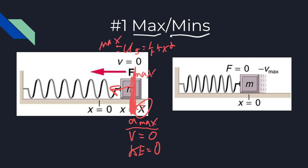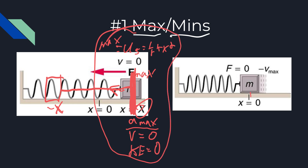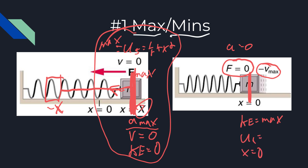As long as you know one of the extremes, you know all the rest. The spring moves to the opposite end — negative x — and those same max/min values still apply. When passing through the middle equilibrium, you have the opposite values: force is zero, acceleration is zero, velocity is maximized because the spring isn't pushing or pulling, kinetic energy is at a maximum, and spring potential energy is zero because x is zero.